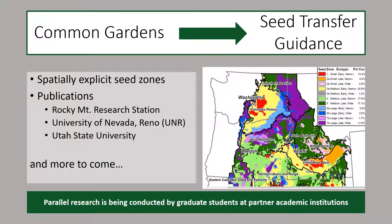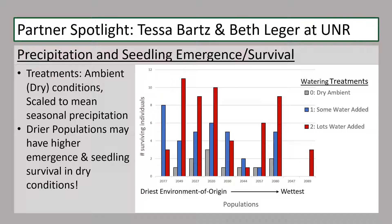In my next slide, I'll be showing preliminary results for a project being conducted by one of our academic partners at the University of Nevada, Reno. Tessa Bartz and Beth Ledger are exploring how water availability and precipitation at the environment of origin affects seedling emergence and survival. They are performing a field experiment using seeds from populations in the common gardens with different watering treatments to mimic a range of precipitation values. Preliminary results suggest that populations originating from locations with less annual precipitation may have relatively higher survival in the dry ambient treatment compared with populations from locations with higher annual precipitation, indicating that precipitation may be an especially important component to consider when selecting seed source populations for restoration.